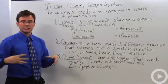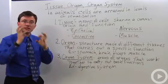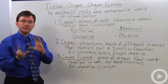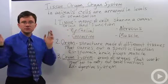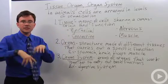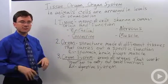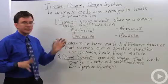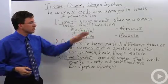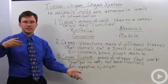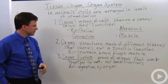My stomach, for example, has some muscle tissue in it to help mix up the food, as well as epithelial tissue to start dumping in some of the digestive enzymes. There's connective tissue helping make up the walls, and there's nervous tissue sending signals that it's time for my tummy to get all rumbly.